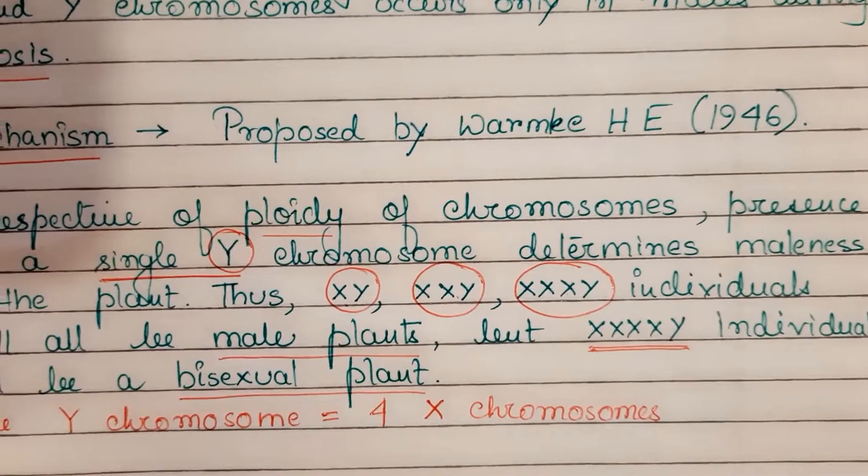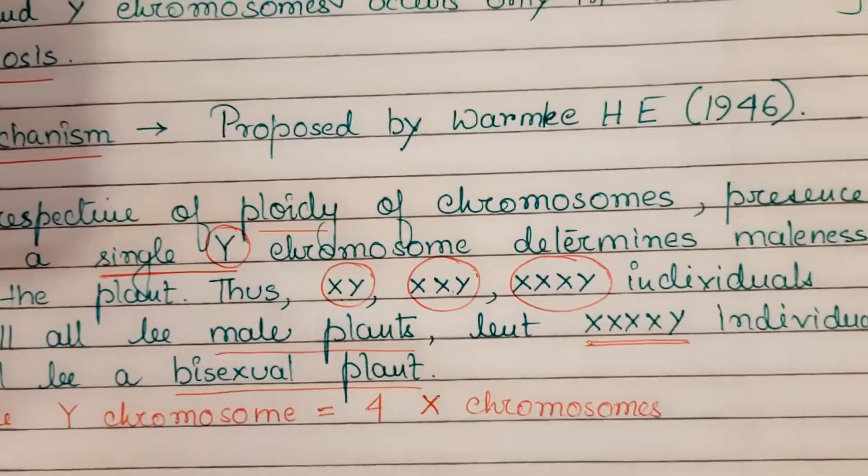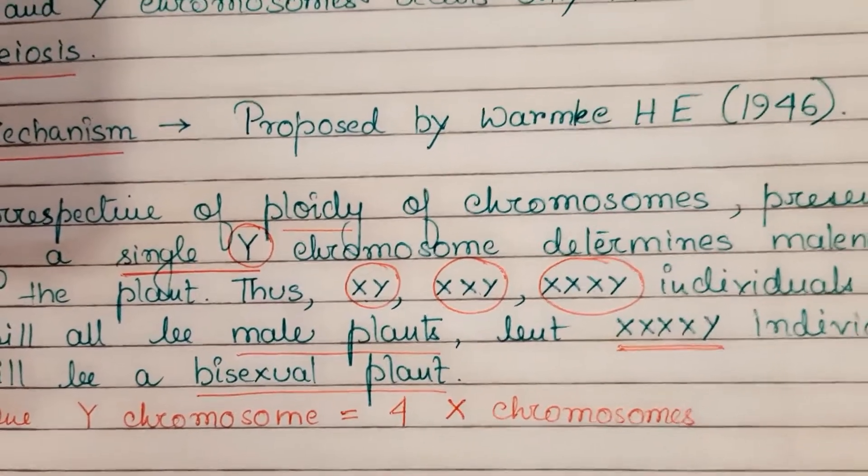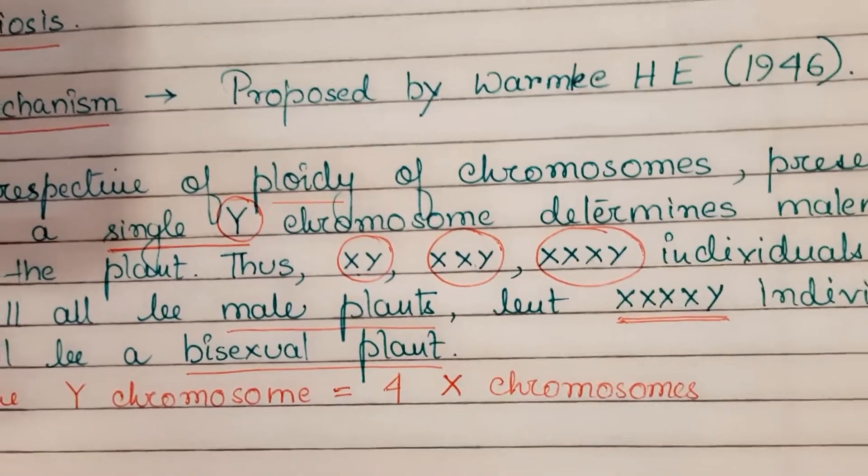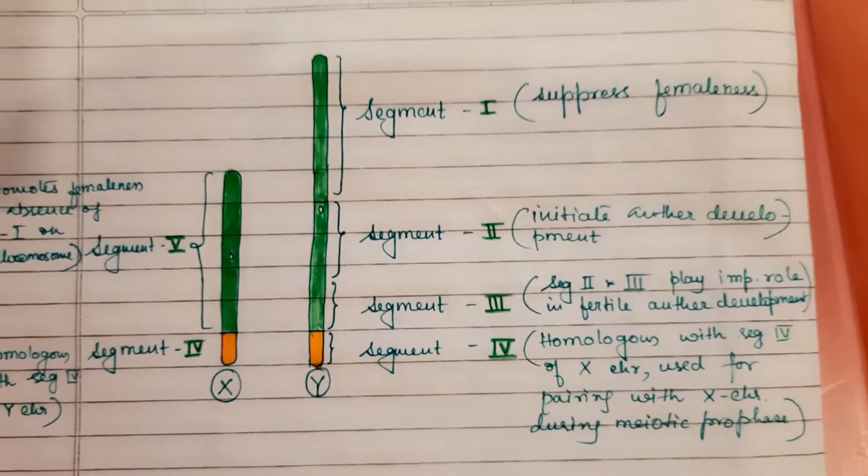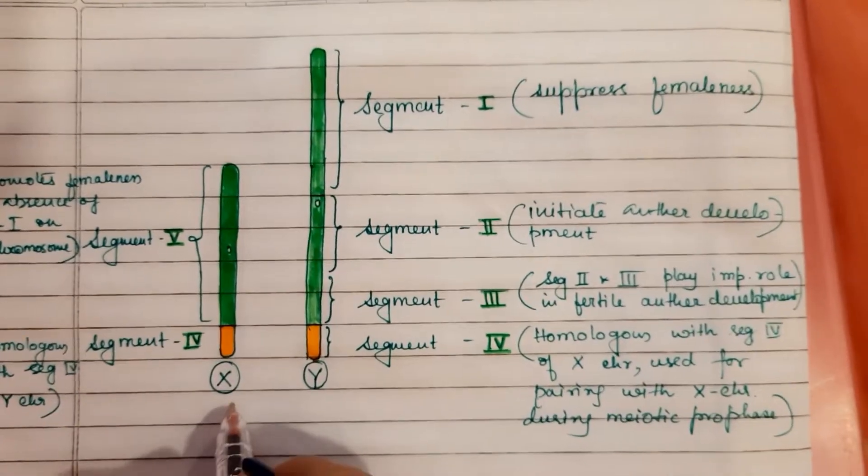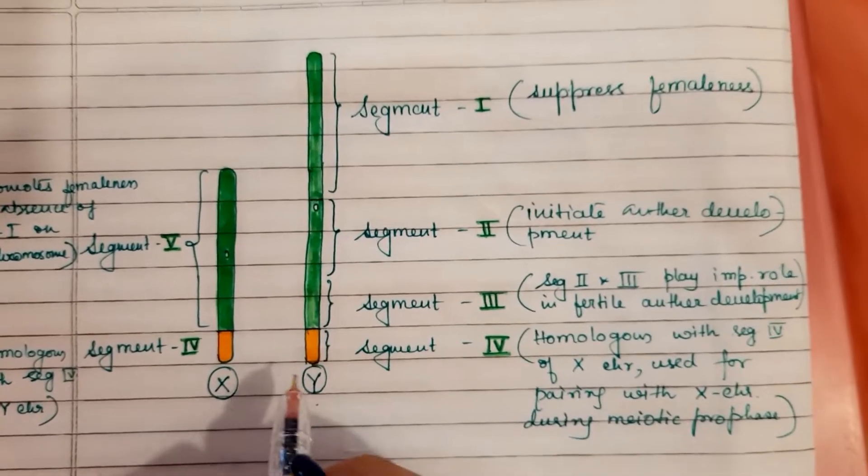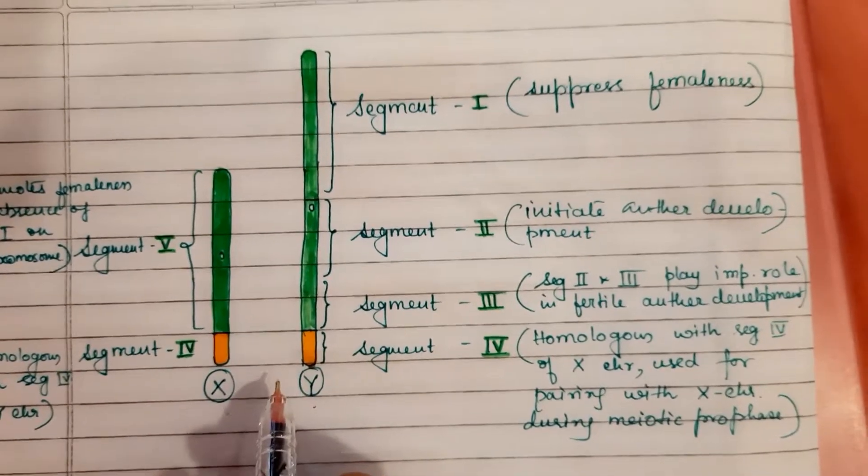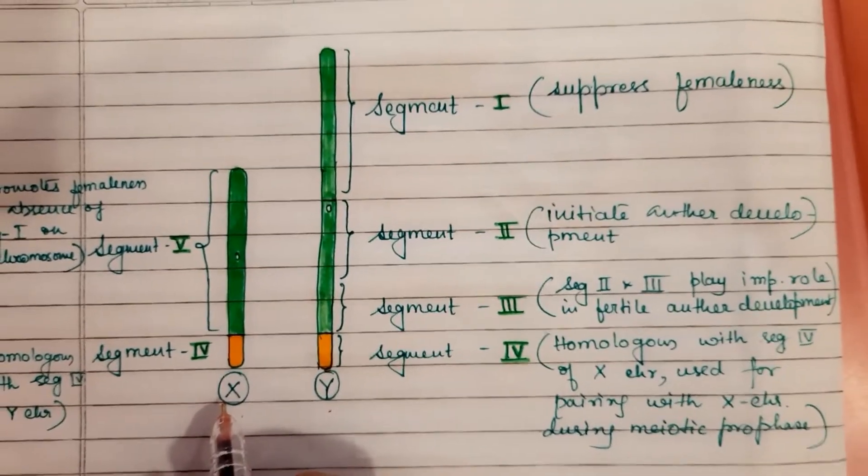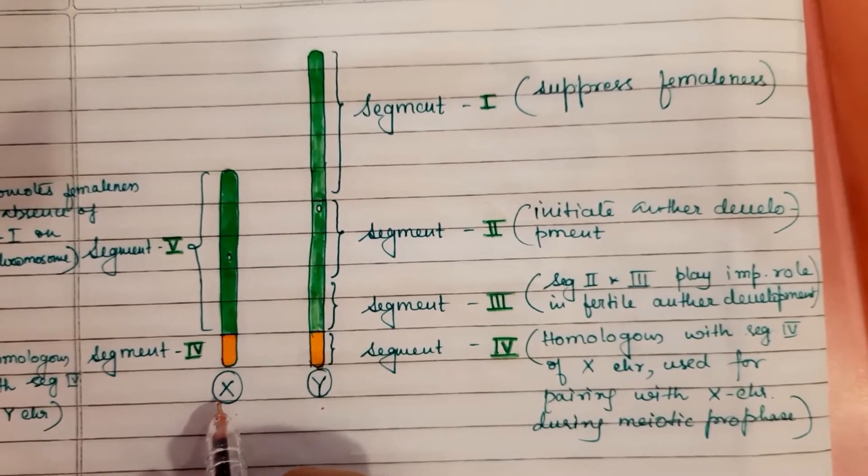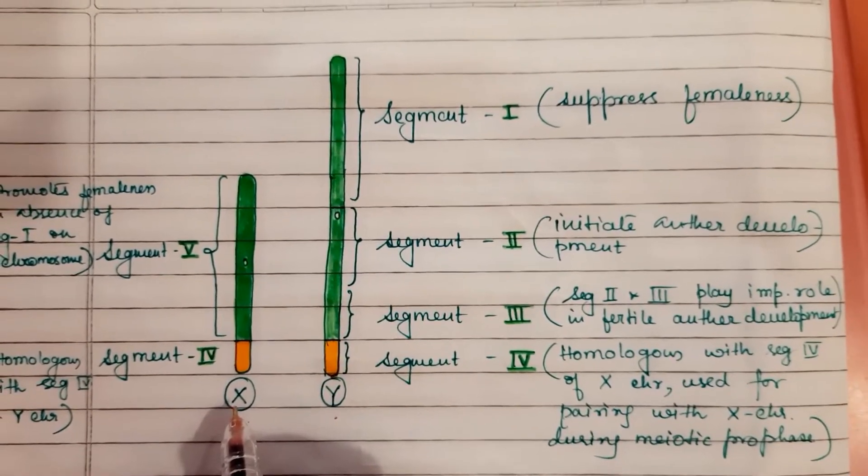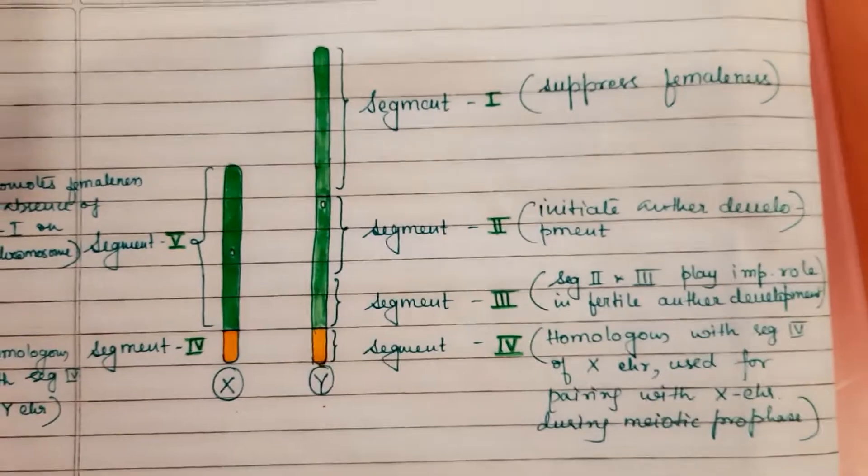Now we'll talk about the structure of X and Y chromosomes in Melandrium album. This is the X chromosome, this is the Y chromosome. The Y chromosome is longer than the X chromosome. From the figure you can see the Y chromosome is longer than the X chromosome. The X and Y chromosome form a heteromorphic bivalent during the meiotic prophase.